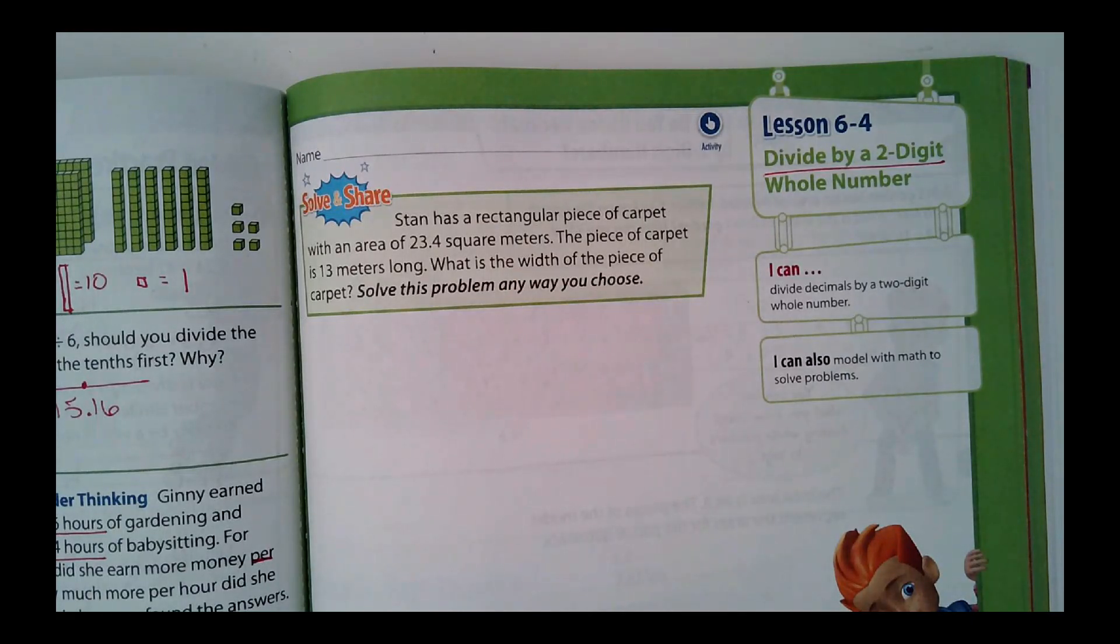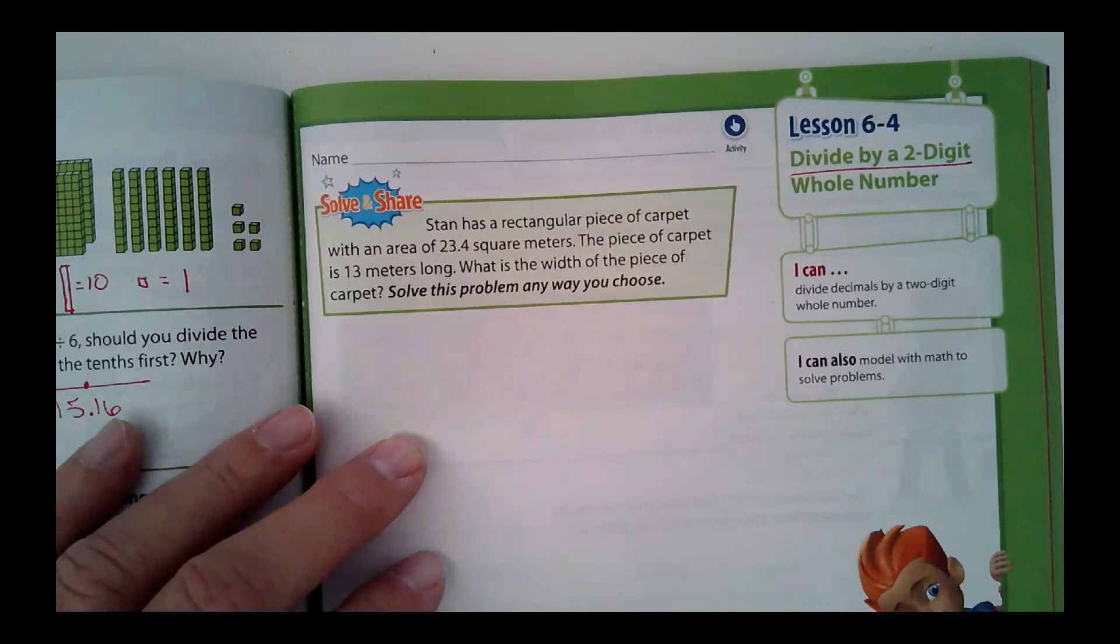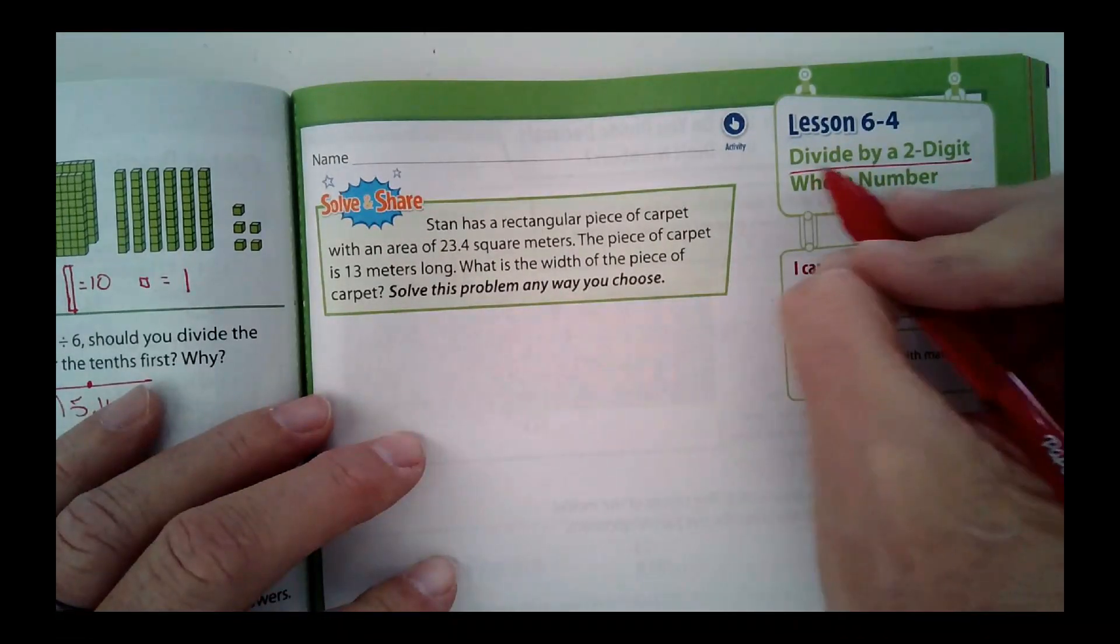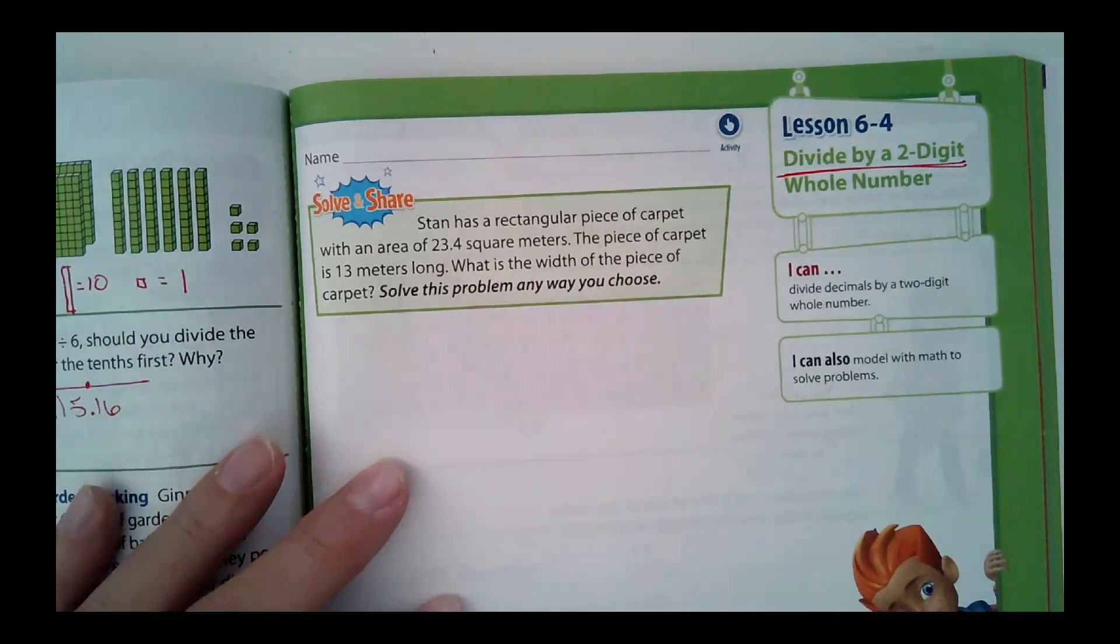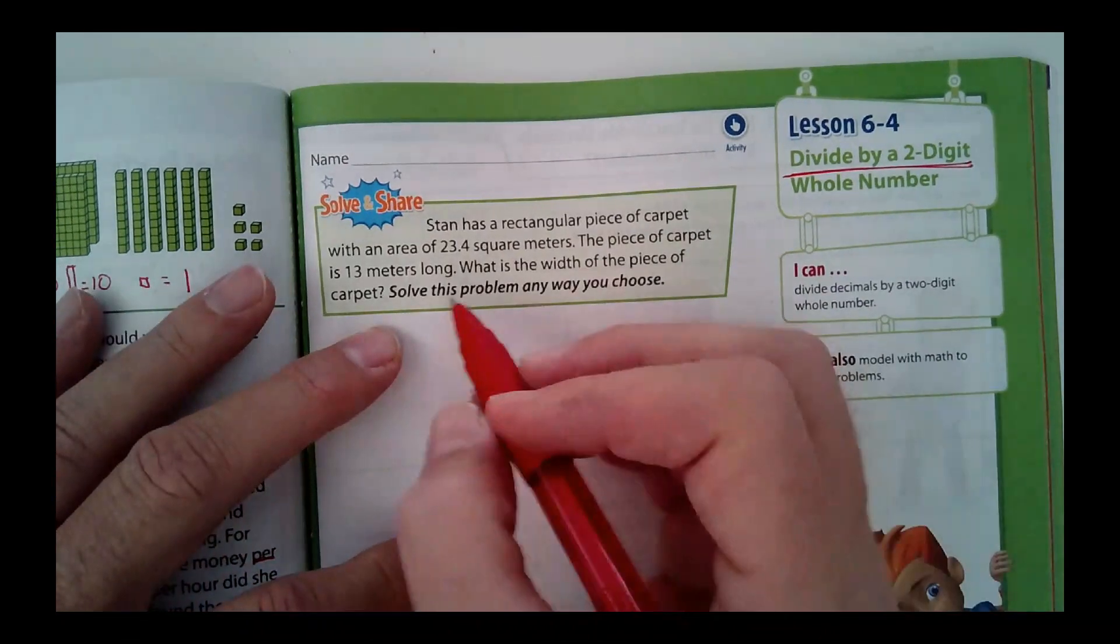Okay, so this is 6-4, page 241, and as I pointed out, we've been dividing by two-digit whole numbers for a couple weeks now. But anyways, let's look at this here.